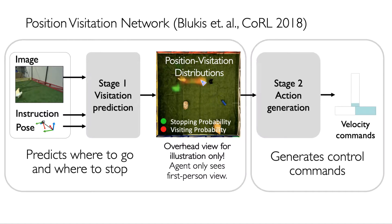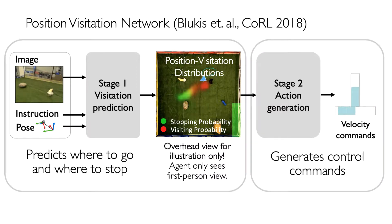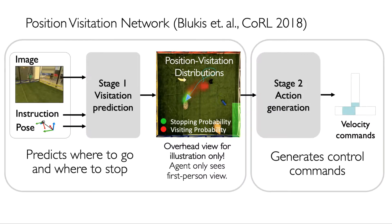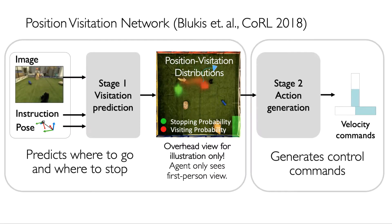So how does it work? The model is based on a position-visitation network — a neural network model that consists of two stages. The first stage predicts where to go in the form of two probability distributions over environment locations: the green distribution is the probability of stopping at a location, and the red is the probability of visiting that location. The second stage then generates actions to steer the quadcopter along high-probability positions and stop at a likely goal location.